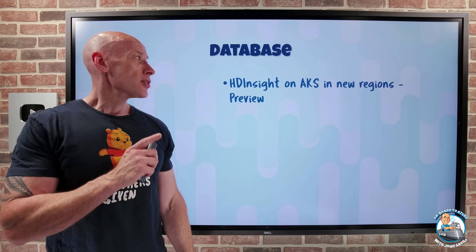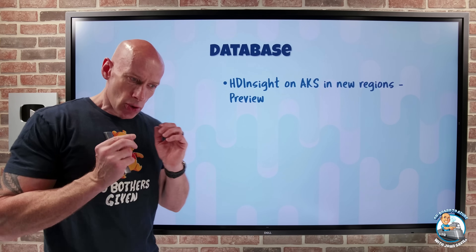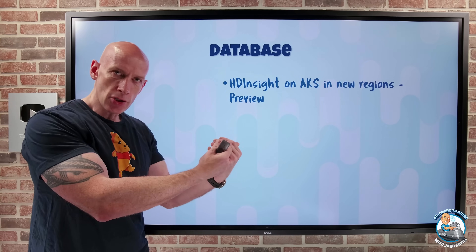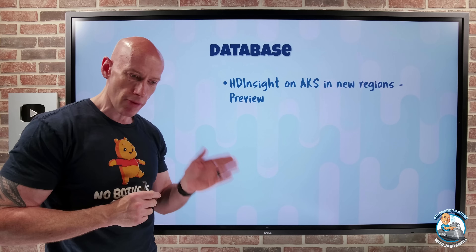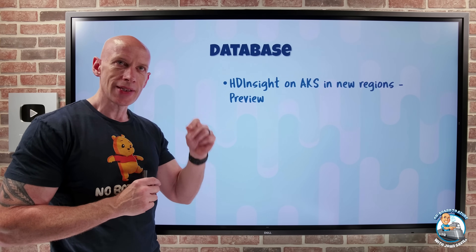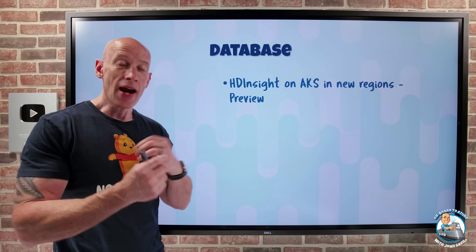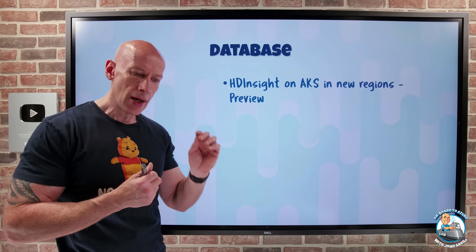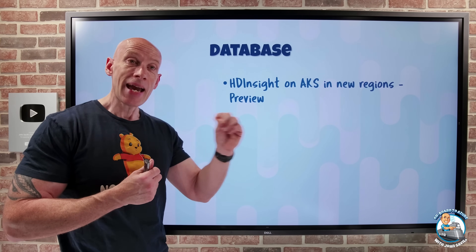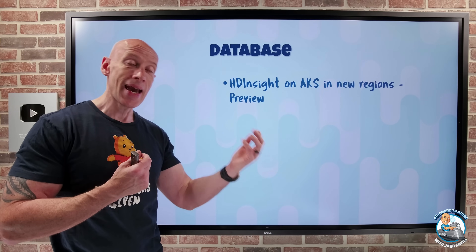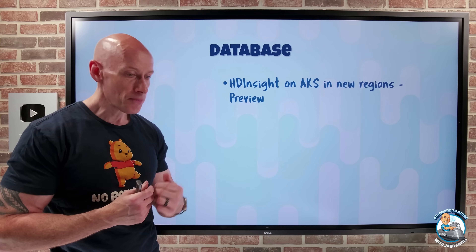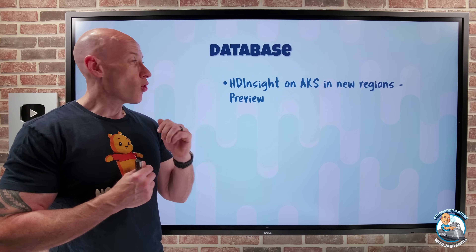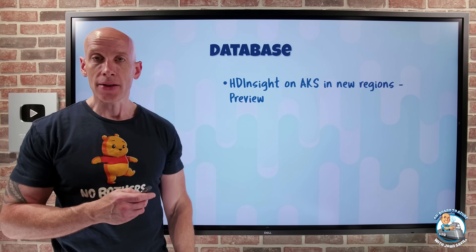On the database side, HDInsight on AKS shifts from running on virtual machines to running in containers on Azure Kubernetes Service — this is the go-forward direction. It lets me run open-source analytics workloads like Apache Spark, Apache Flink, and Trino on containers without managing the containers themselves. I get all the flexibility AKS has in terms of scalability and different SKUs. It uses OAuth-based security instead of Kerberos, and is now available in seven new regions. Regular HDInsight is also now available in Mexico Central.